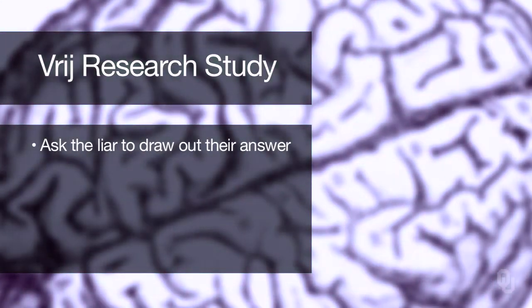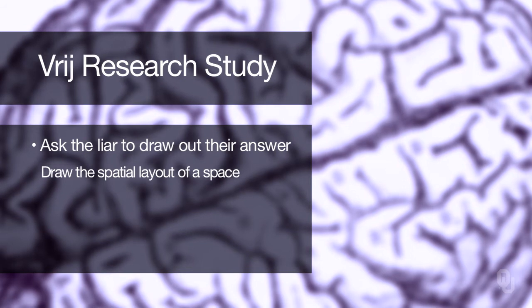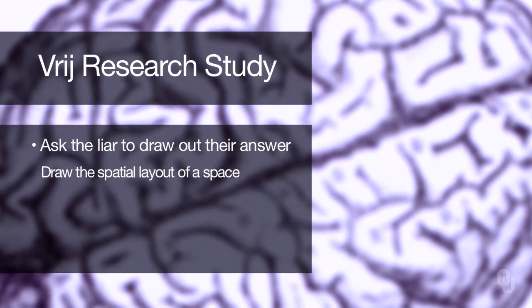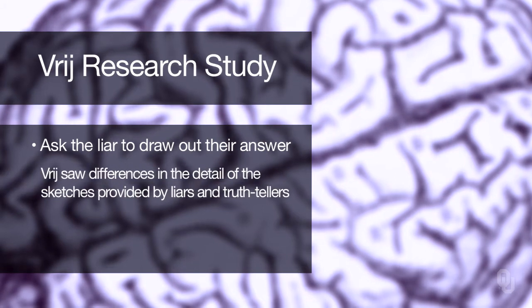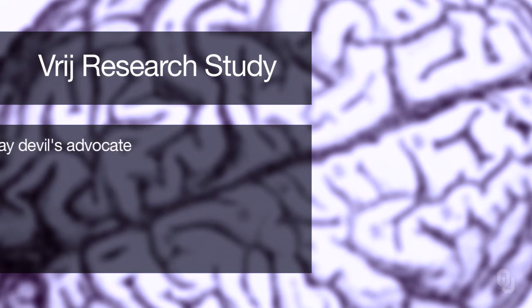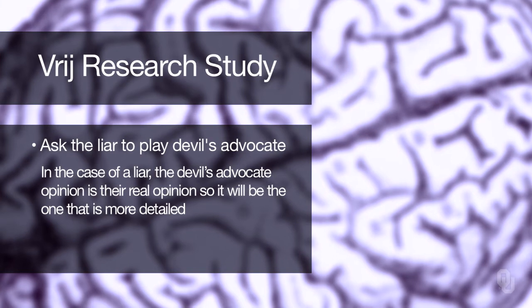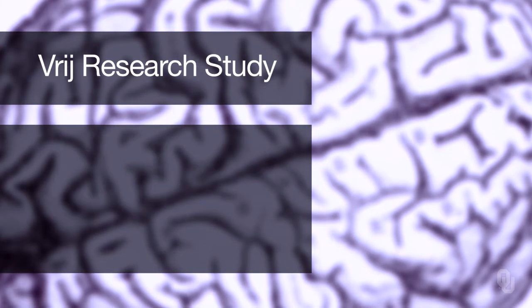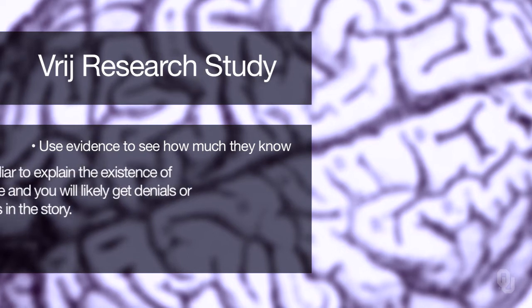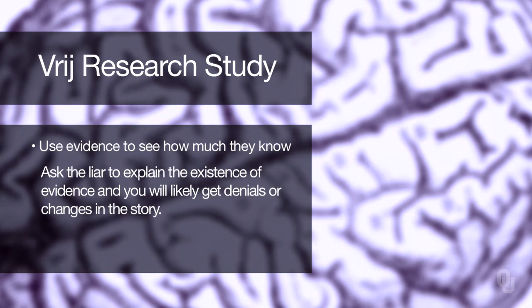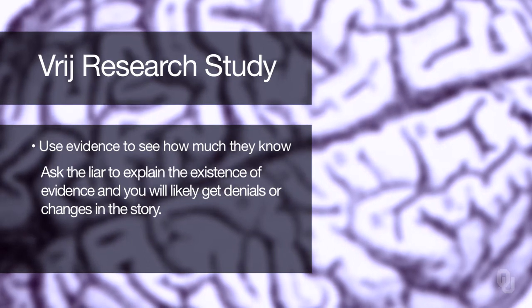We can also ask the liar to draw out their answer. Vry and colleagues have asked people to draw the spatial layout of a space, such as a crime scene, and they saw differences in the detail of the sketches provided by liars and truth-tellers. We can also ask a liar to play devil's advocate — in the case of a liar, the devil's advocate opinion is their real opinion, so it will be the one that's more detailed. We can also use evidence to see how much a liar knows; ask the liar to explain the existence of evidence, and you'll likely get denials or changes in their story. In general, taking away the liar's ability to plan and keeping their story straight will not only point you towards contradictions, but also make the signs of tension, cognitive load, and uncertainty more evident.